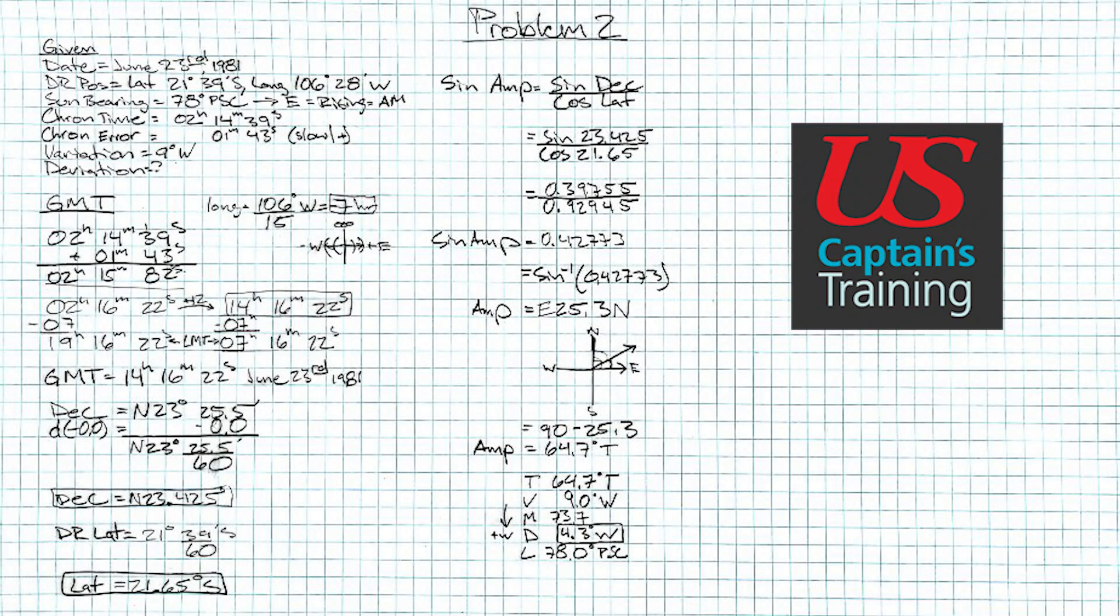Here we are looking at the solution to practice problem two. One thing in particular about this problem I'd like to point out is that you must add 12 hours to your corrected chronometer time in order to get the proper GMT. Take your time with that concept and let it sink in. Enjoy the process.